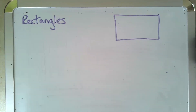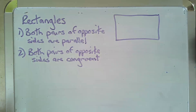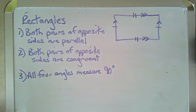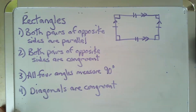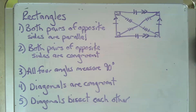Here we have a fairly poorly drawn rectangle, but you get the idea. Rectangles are a more specific kind of parallelogram, so all of the things that apply to parallelograms apply to rectangles, plus we get some new information. Both pairs of opposite sides are parallel and both pairs of opposite sides are congruent, just like before. This time, all four angles measure 90 degrees, therefore all four angles are the same. We also know that because our angles are all the same, our diagonals in a rectangle are congruent and they still bisect each other. This would be a good time for a screenshot.